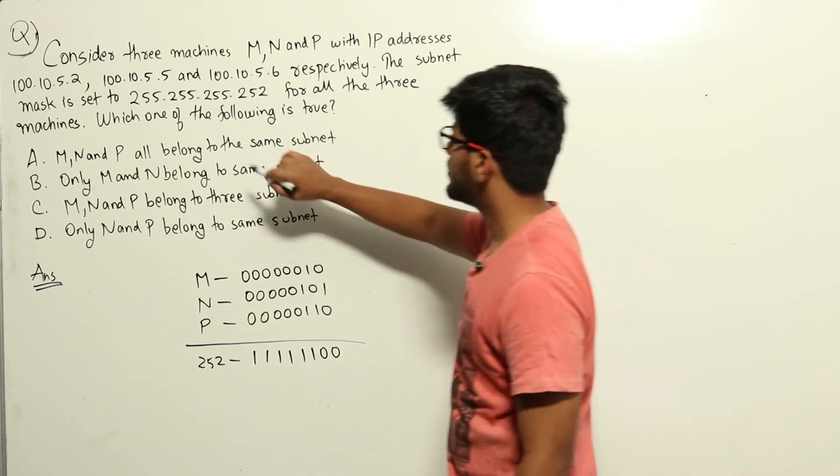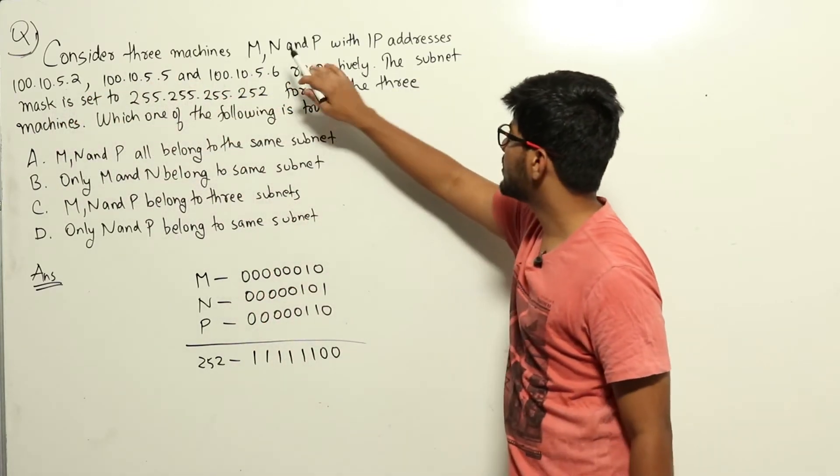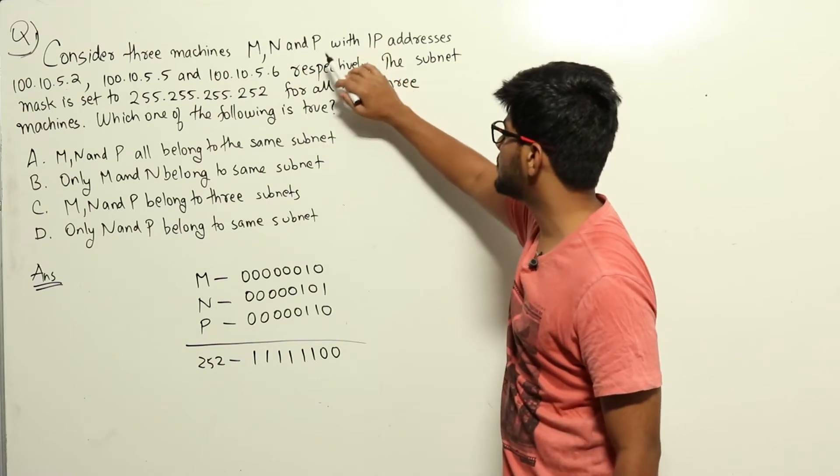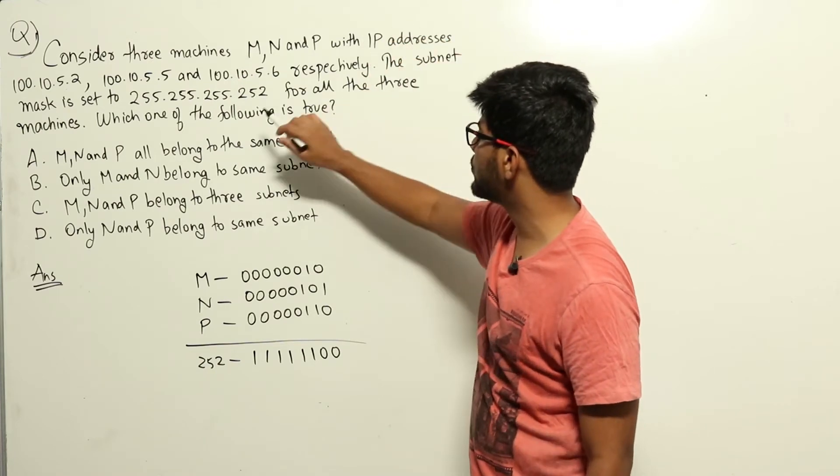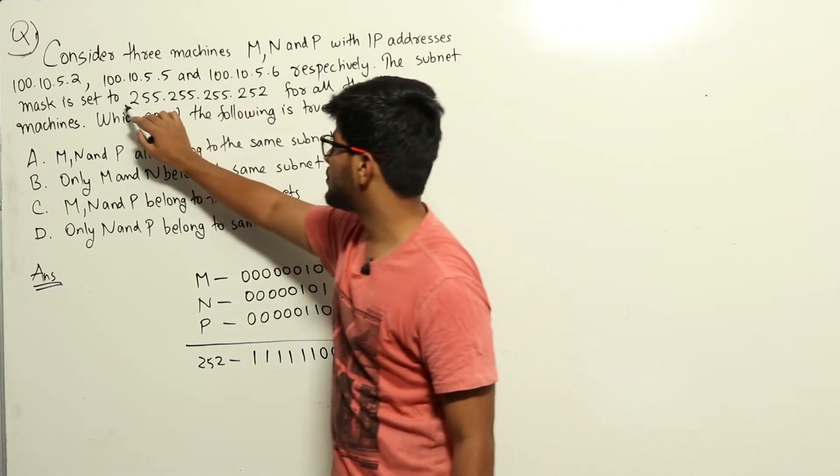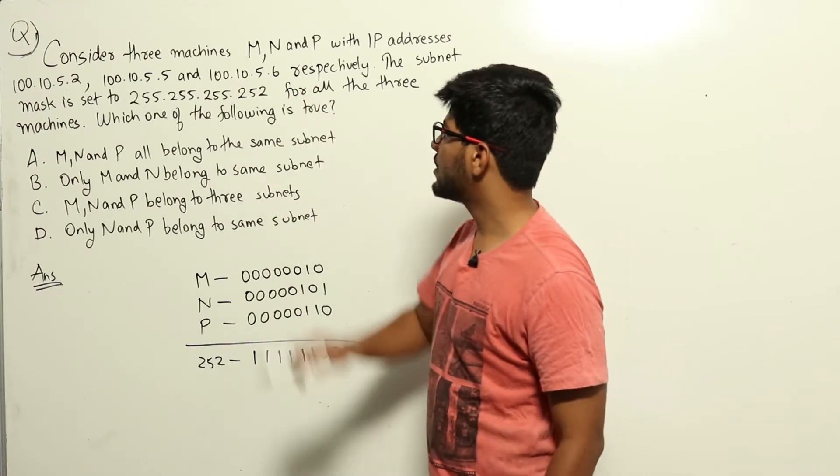What we will do here is we will do the bitwise AND of M, N and P. These are three IP addresses belonging to three different machines. For each of the IP addresses, we will do the bitwise AND with the subnet mask. Subnet mask is same for all, that is given in the question. And then we will find out the network ID.